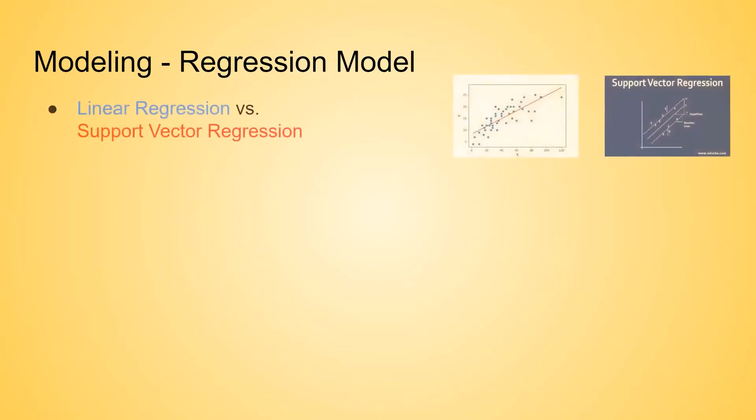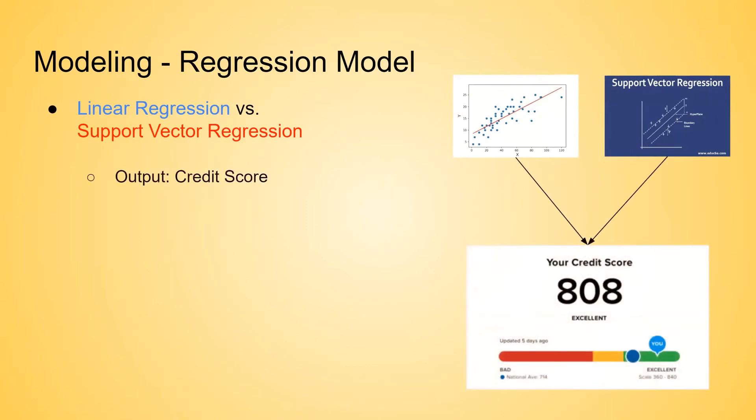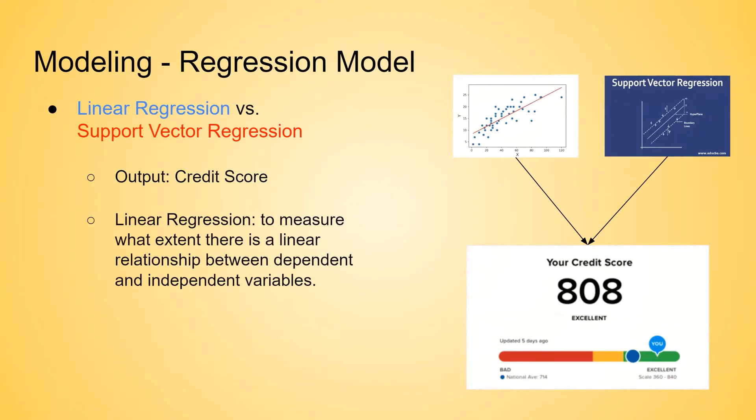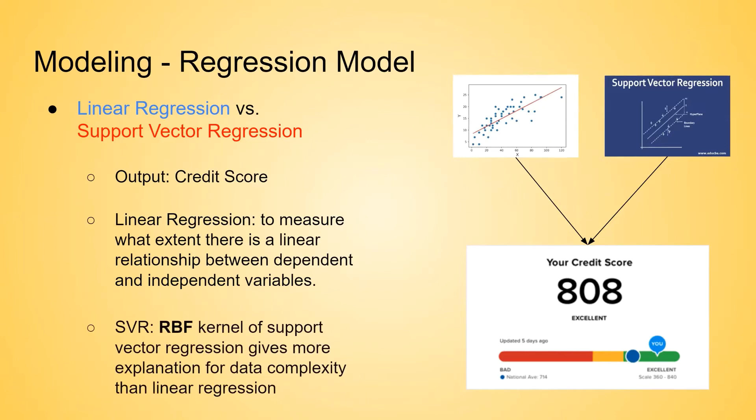In the modeling part, the first type of model we are building is a regression model. Here, we chose to build a linear regression model and support vector regression model. The output for this type of model will be an actual number, which represents a credit score. The reason we chose to build a linear regression model is because we want to measure what extent there is a linear relationship between dependent and independent variables. The second type of regression model we are building is support vector regression. Support vector algorithm is known for its kernel trick to handle non-linear input spaces. As you can see here, we use RBF as our kernel function because RBF can map an input space in infinite dimensional space. Therefore, it gives more explanation for data complexity than a linear kernel function.